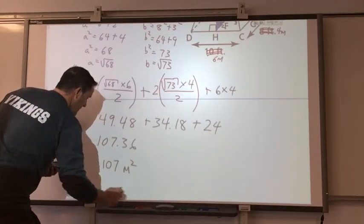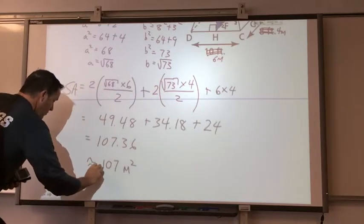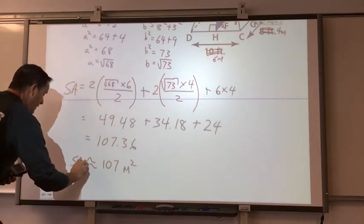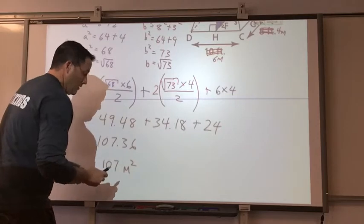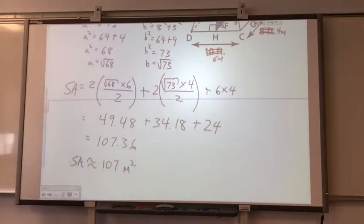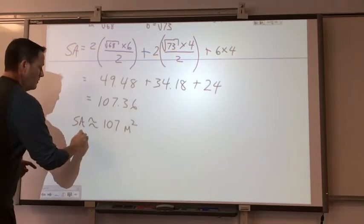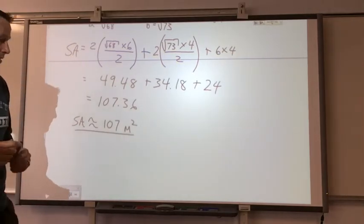107 meters squared. And this, because it's not exact, it's approximate. So, the surface area, all the sides of the shape added together, give us an answer of 107 meters squared.